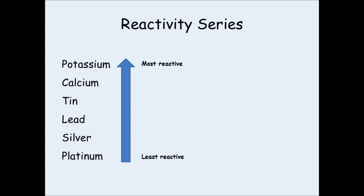For instance, in this series here, potassium is the most reactive and platinum is the least reactive. We also have four other metals: calcium is pretty reactive, tin a little bit less so, lead even less reactive, silver near the bottom even less reactive, and platinum the least reactive of all.